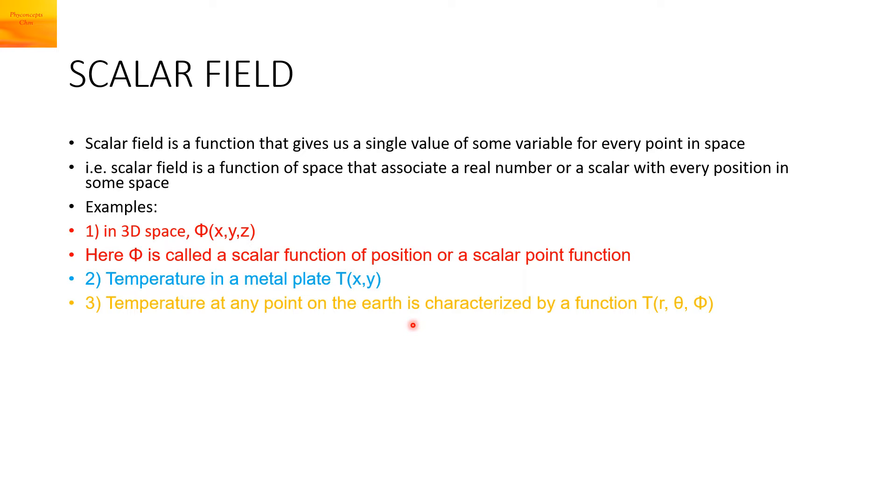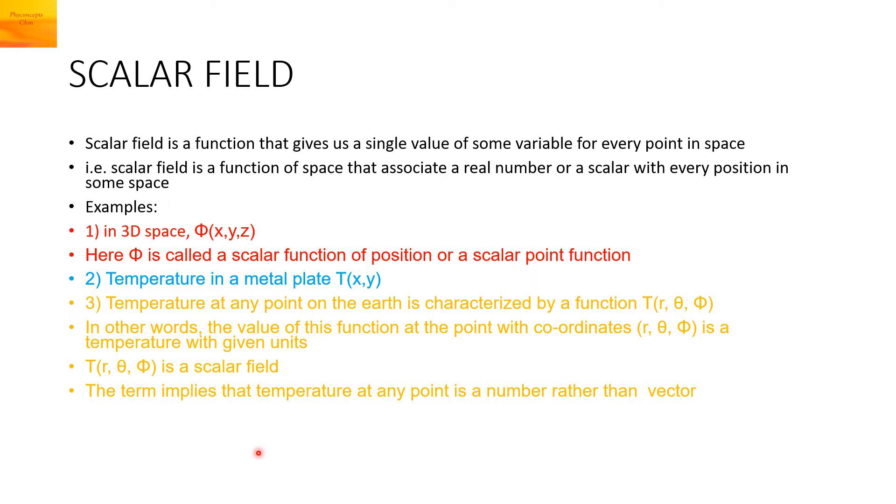Same way you can speak about the temperature in a metal plate or the temperature at any point on the earth. It is characterized by a function capital T, and this capital T depends upon the coordinates of a particular point on the earth. These coordinates can be represented as R, Theta and Phi. The temperature is a scalar field. This implies that the temperature at any point is a number rather than a vector.